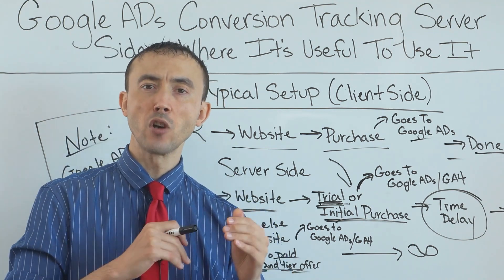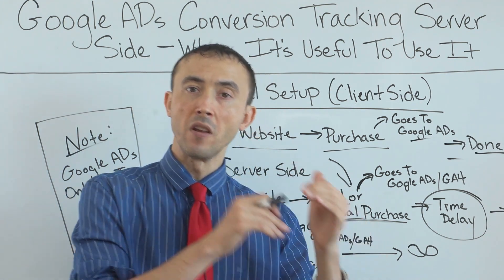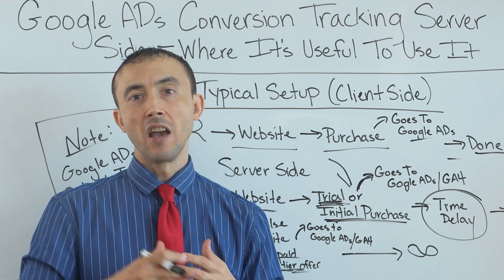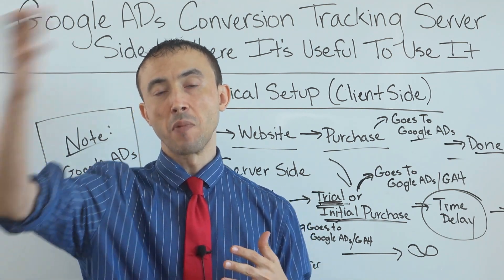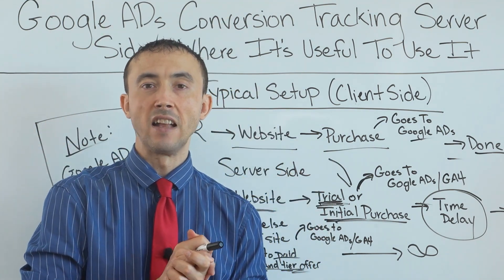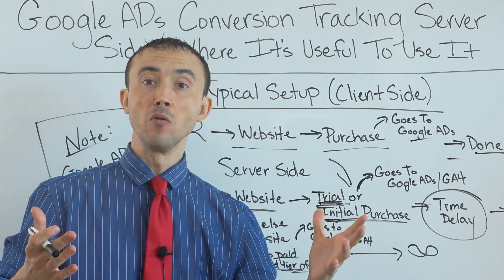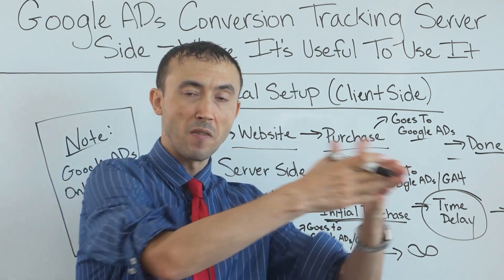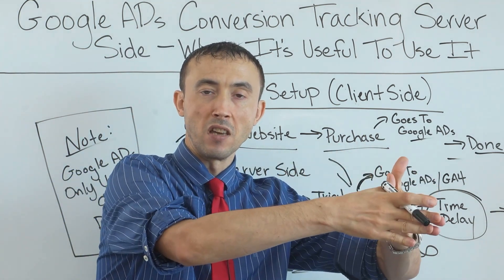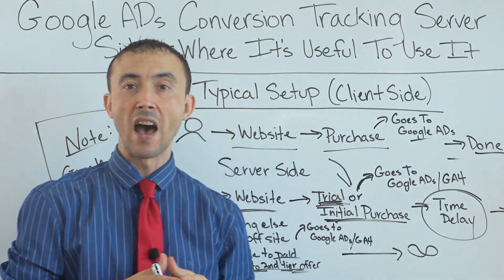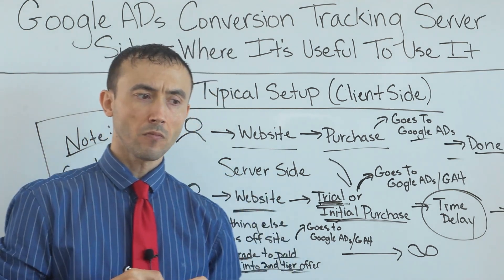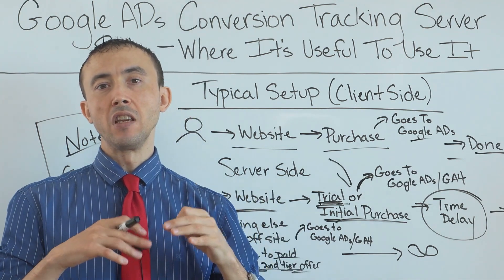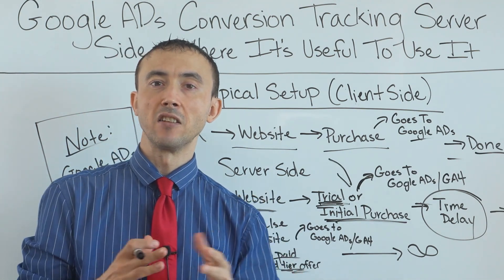If you want to track form leads, phone leads, leads that come into the live chat, and want to track whether they purchase so you can pass that information back to Google Ads — that's called offline conversion tracking. You always should be doing that as well, for the same reasons I mentioned, because the more accurate information about who's truly valuable that you can get, the better the results you're going to get from your ads.